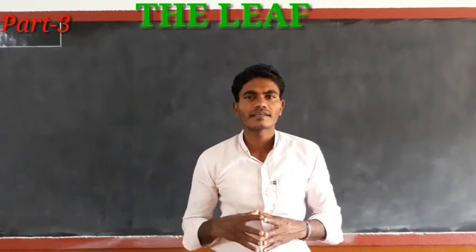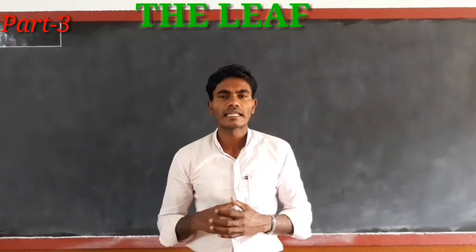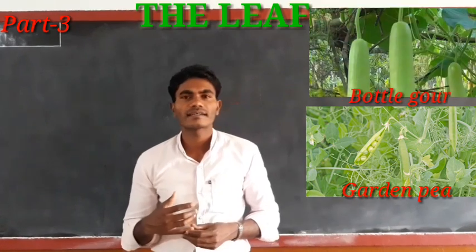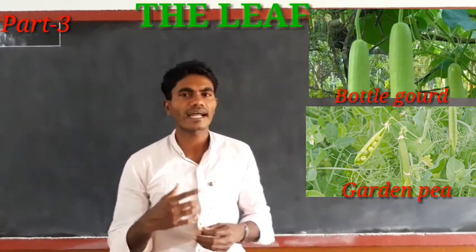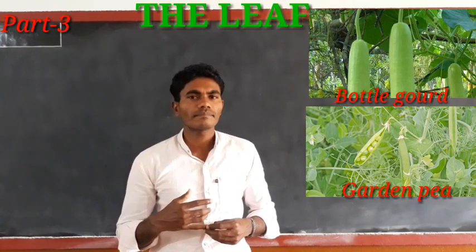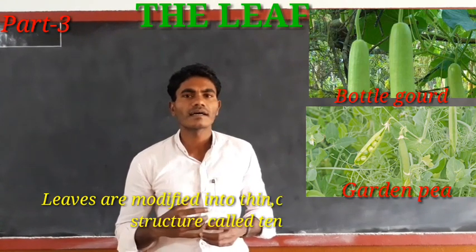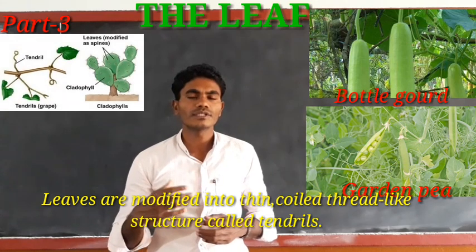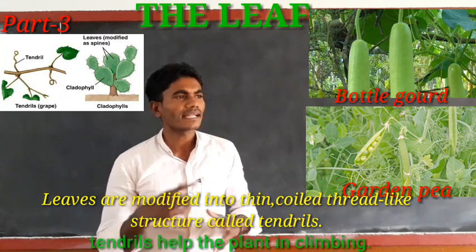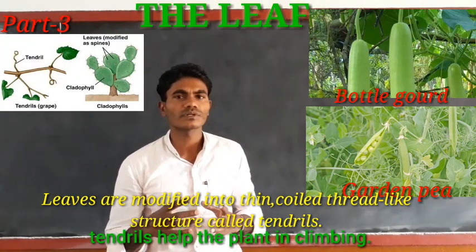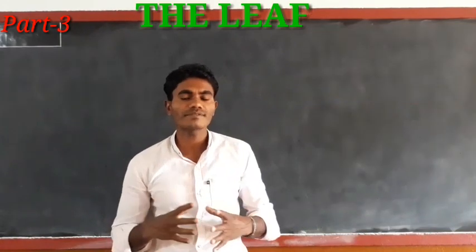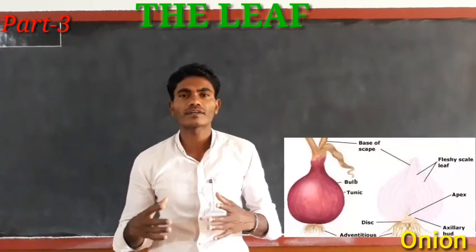You may have seen in your kitchen garden plants like garden pea and bottle gourd. Please look at them on your screen. In garden pea and bottle gourd, the leaves are modified into thin, coil-like structures called tendrils. These tendrils help to support the climbing plants.